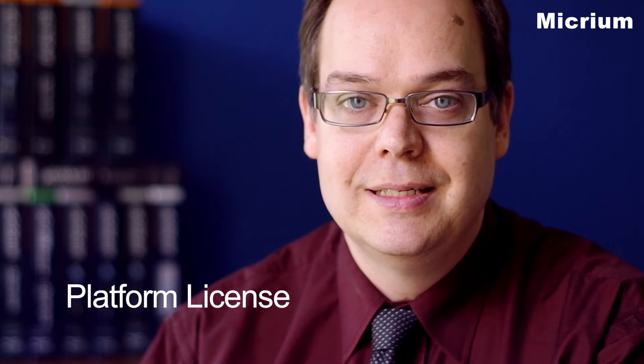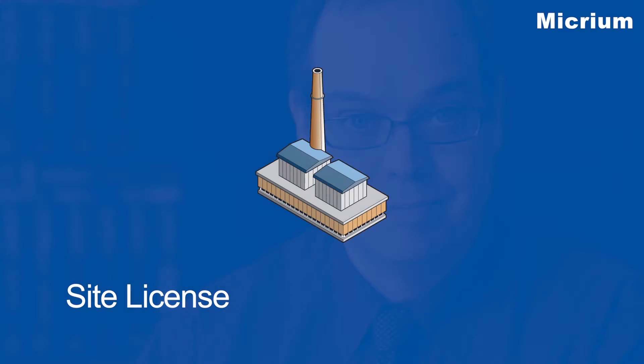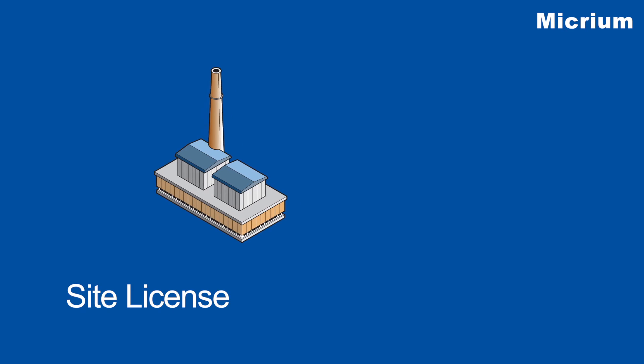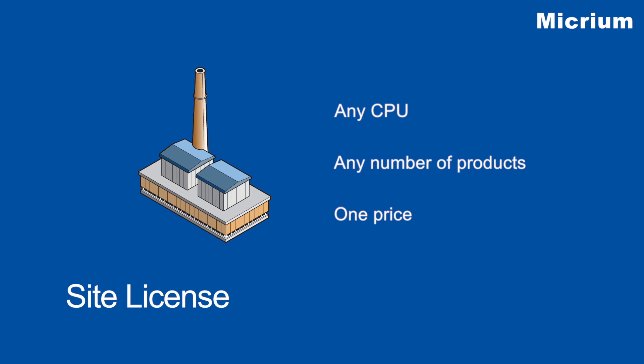This license is ideal for companies that produce a wide variety of products with a common underlying architecture. The site license provides tremendous flexibility — it allows you to embed Micrium software into any product with any CPU that you want. There are no restrictions on design or quantity, so long as all the products are designed at the same physical location.